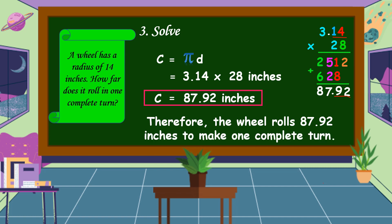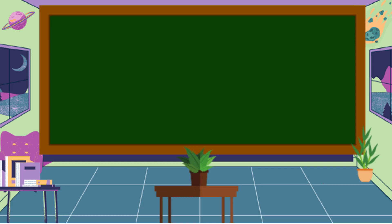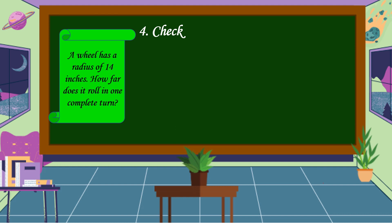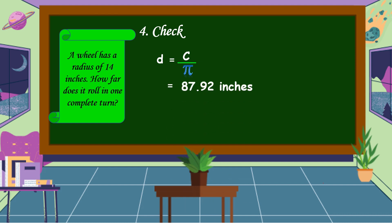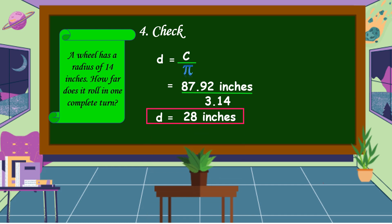Therefore, the wheel rolls 87.92 inches to make one complete turn. We have already an answer to our problem. The last step is we're going to check. We're going to find the diameter. The formula in finding the diameter is circumference divided by pi. In our problem, we got an answer of 87.92 inches as our circumference, and the approximate value of pi is 3.14. By using a calculator, if we divide 87.92 inches by 3.14, the diameter is equal to 28 inches, which means the radius is equal to 14 inches. Therefore, our answer is correct.